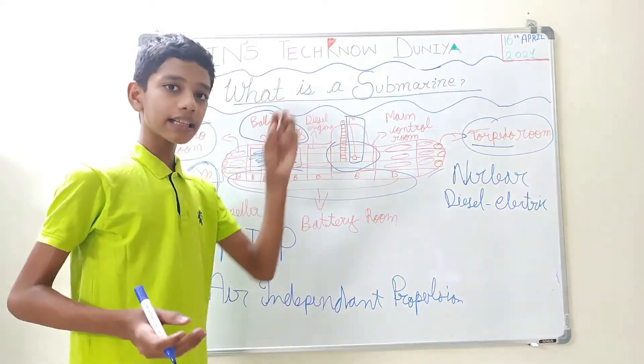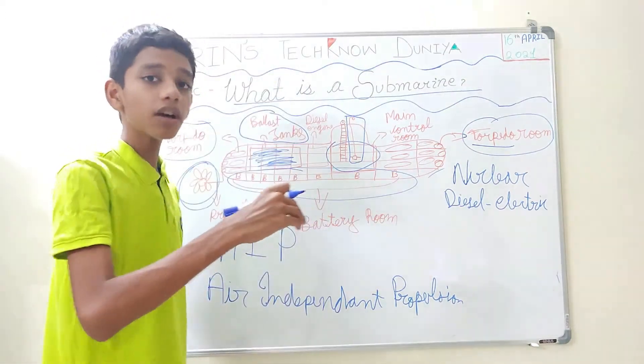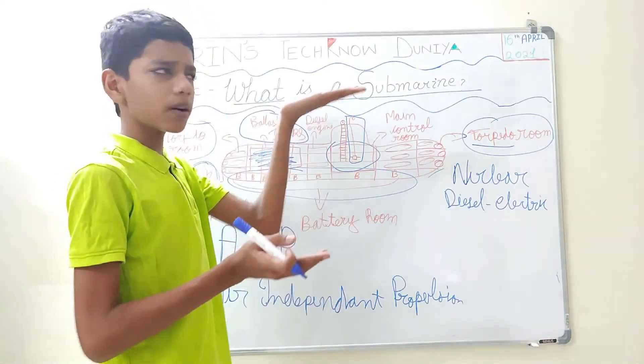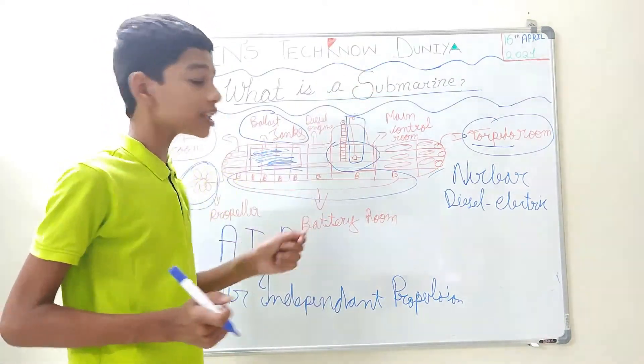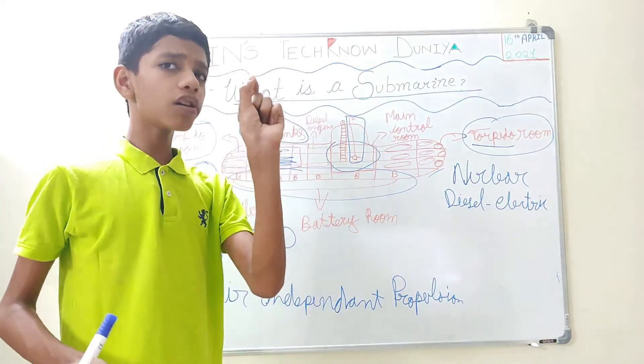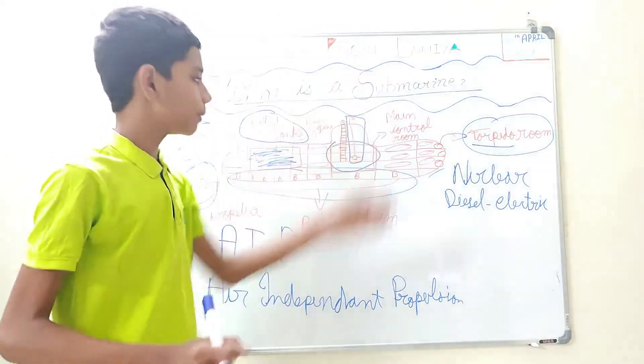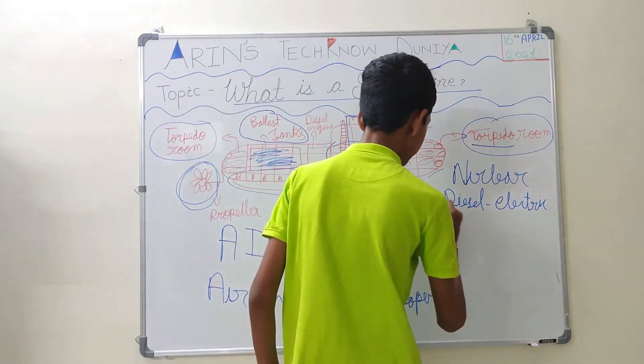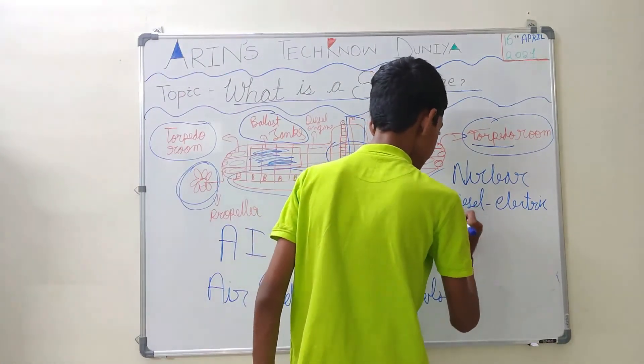From that bio toilet, whatever waste is gone, it is converted into oxygen and is given into this diesel engine. And it goes up to the depth of 20 to 30 meters and it just takes up the small nozzle. And the smoke is removed from the submarine and the batteries are charged.